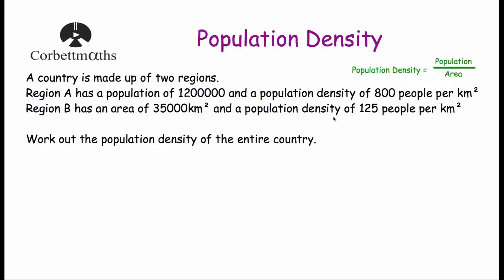Our last question says: a country is made up of two regions. Region A has a population of 1,200,000 and a population density of 800 people per kilometre squared. Region B has an area of 35,000 kilometres squared and a population density of 125 people per kilometre squared. We've been asked to work out the population density of the entire country — which means dividing the total population by the total area. For Region A we need to find the area; for Region B we need to find the population.